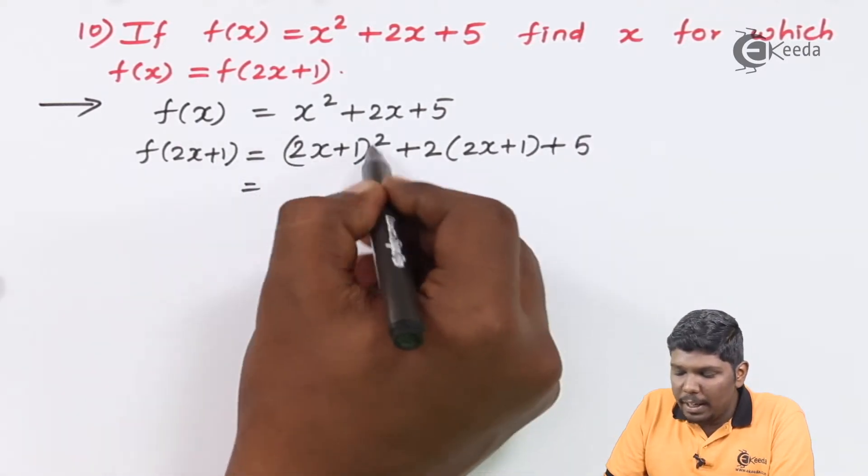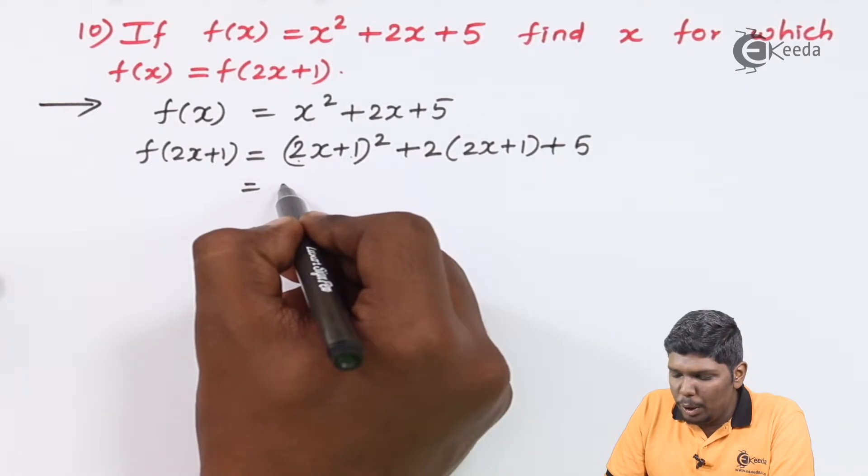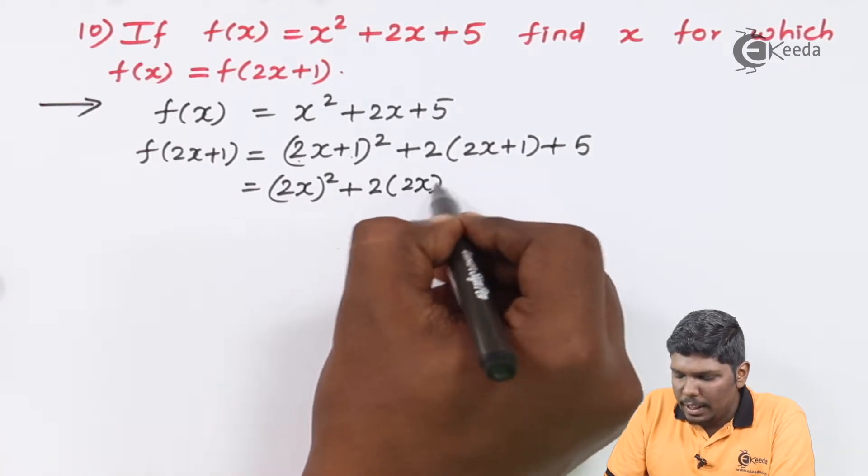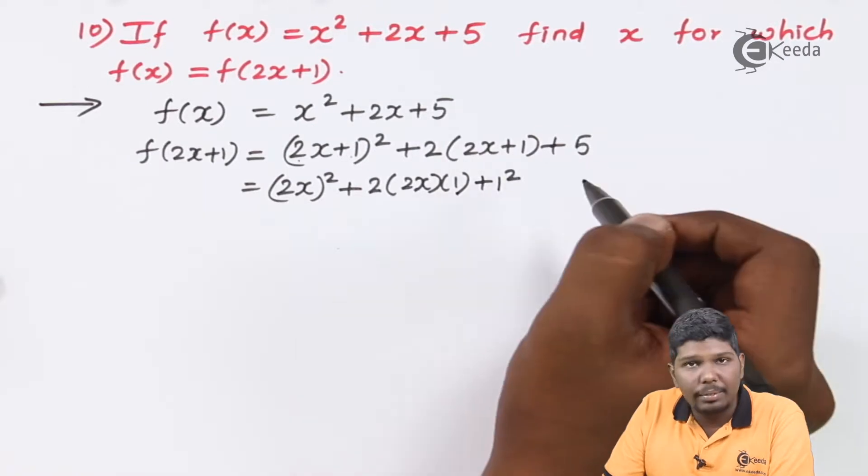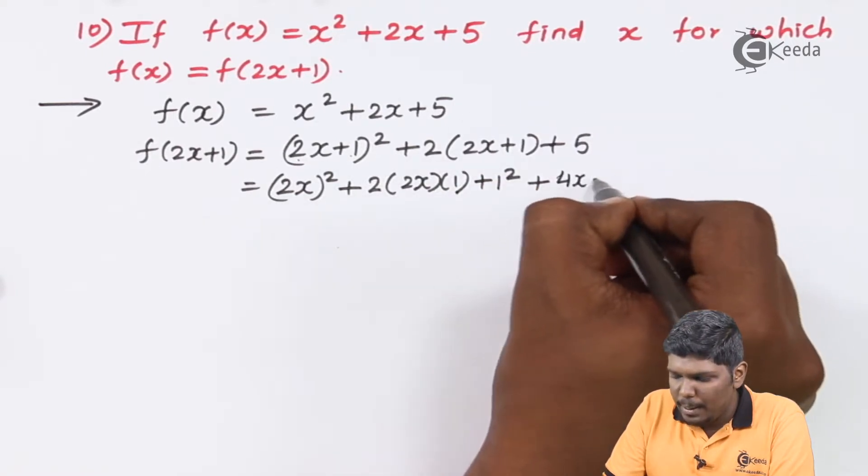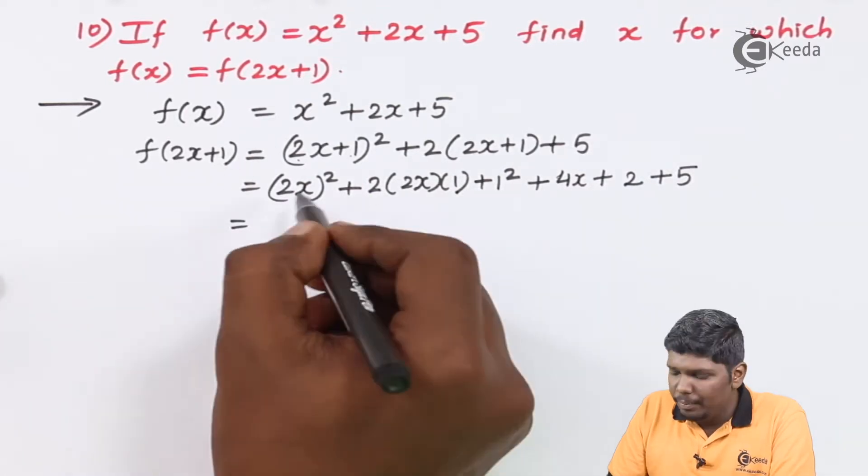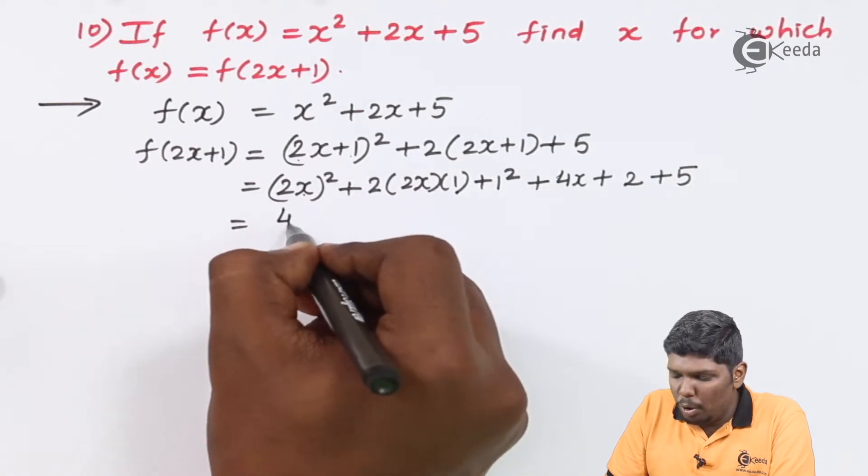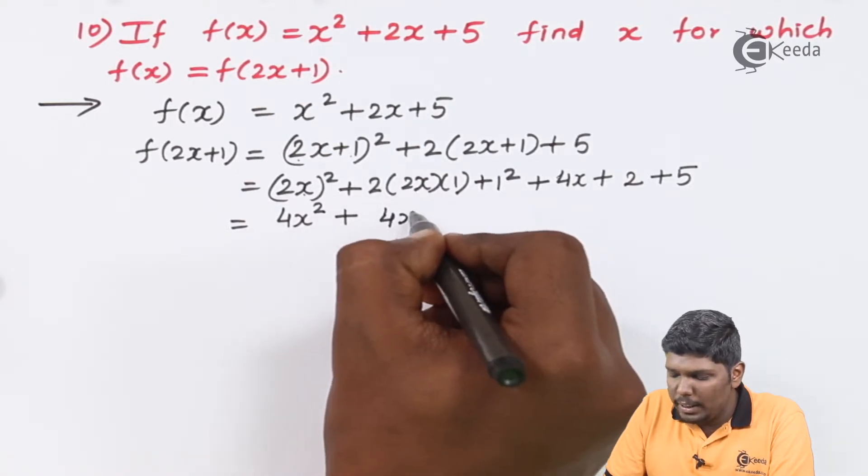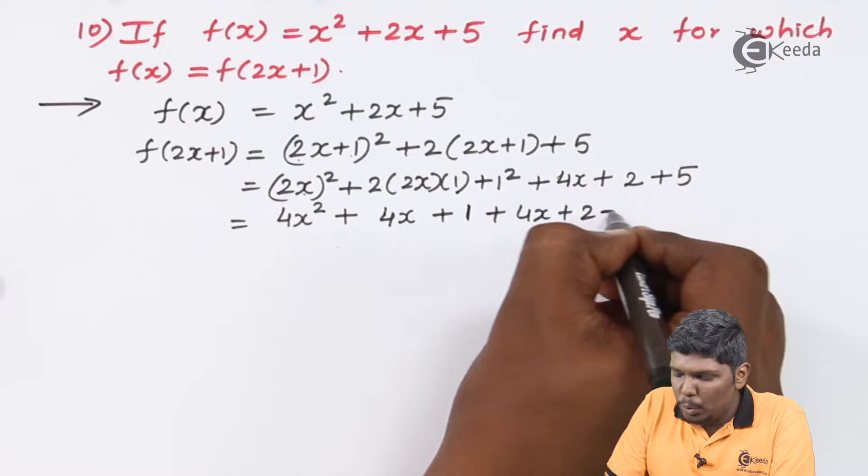Now to solve this bracket we will expand this using the formula (a+b)². So (a+b)² will be equal to a², that is (2x)², plus 2ab, that is 2·2x·1, plus b², that is 1², plus 2 will be multiplied to both the terms. So this becomes 2·2x, that is 4x, plus 2·1 = 2, and the remaining is plus 5.